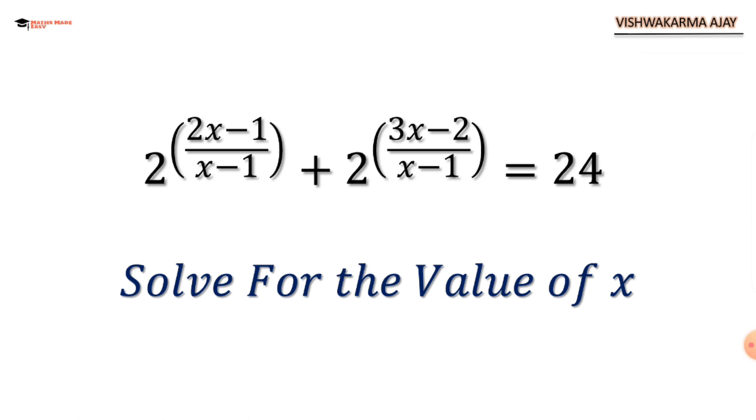Hello and welcome back to Maths Made Easy. In this video we are going to solve a very interesting question featuring law of indices. 2 raised to (2x minus 1) upon (x minus 1) plus 2 raised to (3x minus 2) upon (x minus 1) is equal to 24. Solve for the value of x.